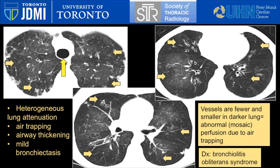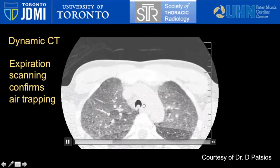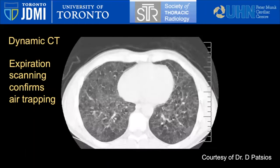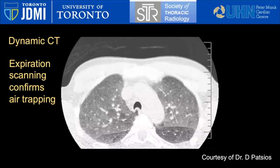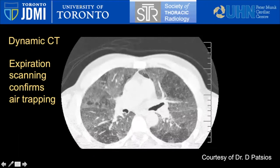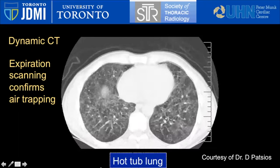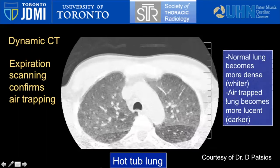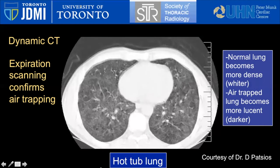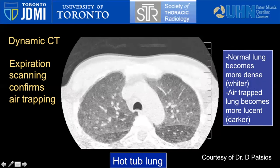Notice how we can suspect gas trapping even on an inspiratory view. If you look at the trachea here, it's convex posteriorly indicating inspiration. On an expiratory view, you would expect the trachea to become like a frown. Expiration scanning is extremely useful to confirm gas trapping — it may not be done routinely, but it is very helpful. Gas-trapped lung becomes progressively more conspicuously lucent on expiration, whereas normal or ground glass density lung becomes more dense. This is a case of hot tub lung.